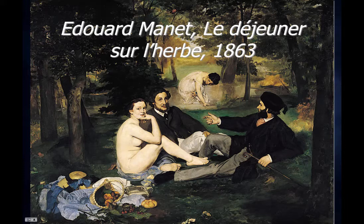In 1863, Édouard Manet — as you can see here — submitted this painting to the Salon, where academy painters exhibited their work, and this painting was rejected. He didn't really understand why, since he was using the colors and technique he was supposed to use, but it still got rejected. It wasn't because of the nude body in the image — it was because of the nude body in a contemporary setting with two clothed men, which was a big no-no at the time.